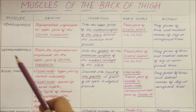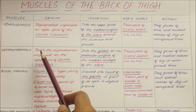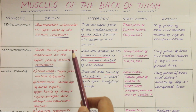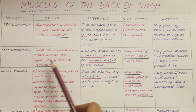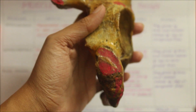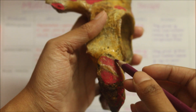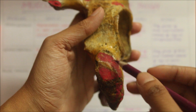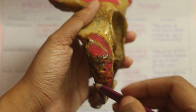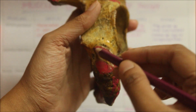Moving on to the semimembranosus muscle, it originates from the superolateral impression on the upper part of the ischial tuberosity, right here.